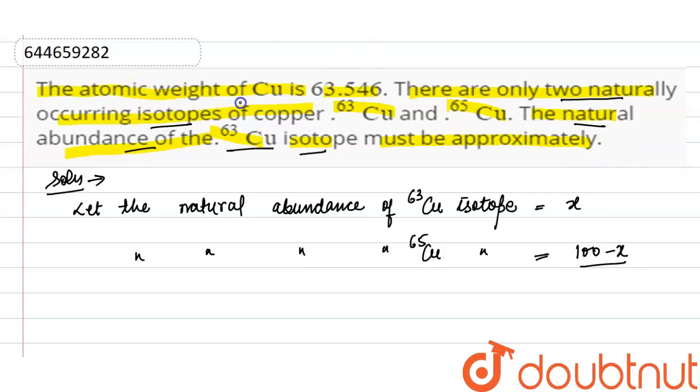Now, what is the given atomic weight of copper? So, atomic weight of copper given is 63.546 gram.